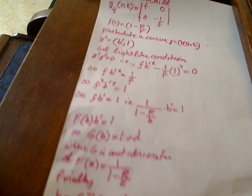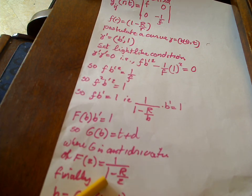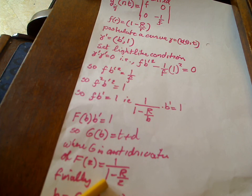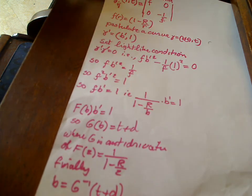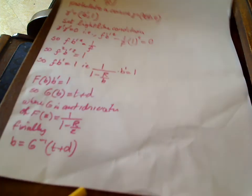So capital G is just an anti-derivative of capital F like that. So you look up, using your favorite method, what the anti-derivative of this function is: f(z) equals one over (1 - R/z). And once you find it, so once you've got your capital G...